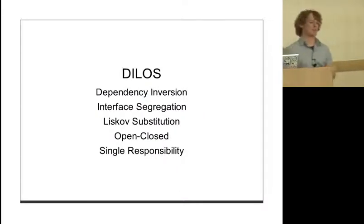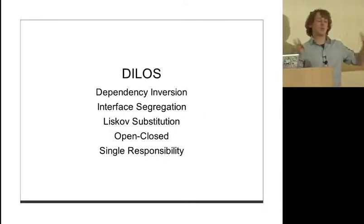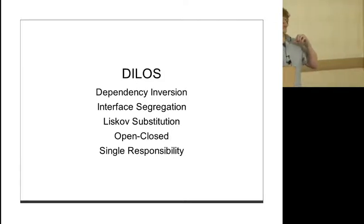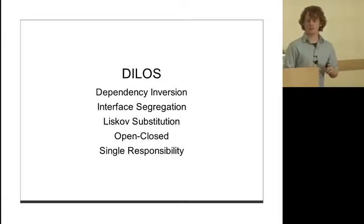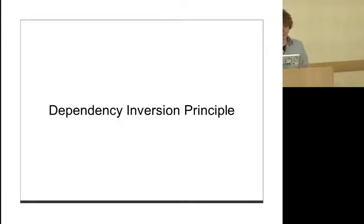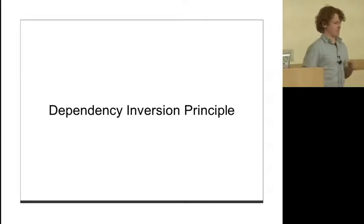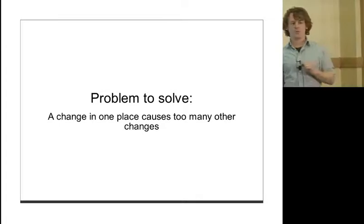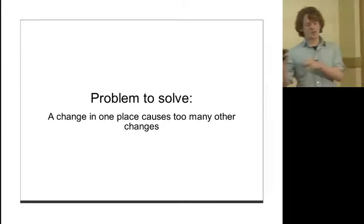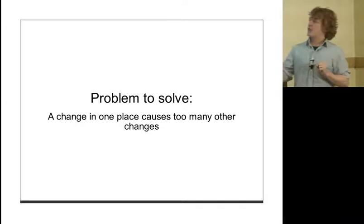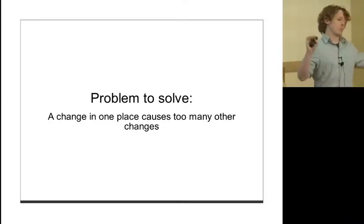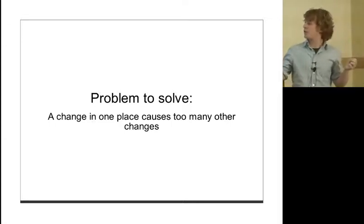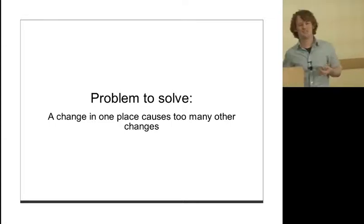These are the five principles we're going to talk about. We're going to see what problems they're trying to solve, see what the applications of them are in Clojure, how things are the same as OO, and how things are different. First, dependency inversion. The problem we're trying to solve is when we've got a change to our code in one place and that change cascades to too many other places in your code.